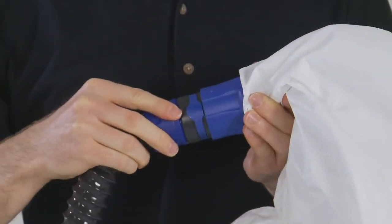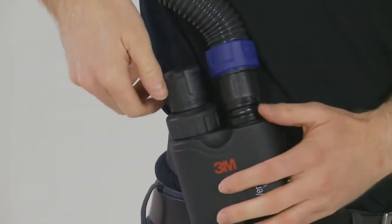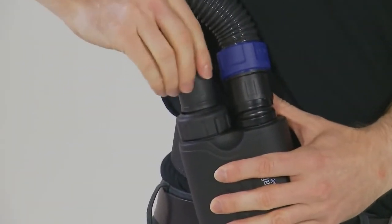Attach the breathing tube to the head top. Adjust the airflow through the regulator by pulling the adjustment knob up and turning. Lock the regulator knob by pushing down.